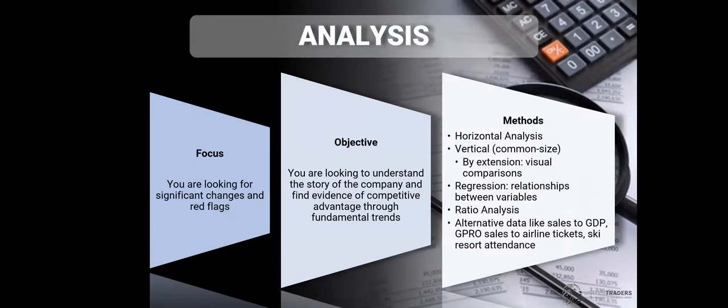We previously talked about what we're looking for: significant changes and red flags. We want to be able to gauge the story of the company, find the numbers backing that story, and find evidence of competitive advantage that will allow us to stay in that investment for years to come. There are a lot of methods here, and we're going to go down the list and show you some examples.